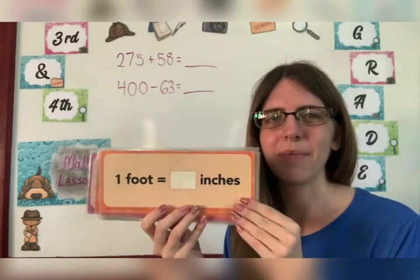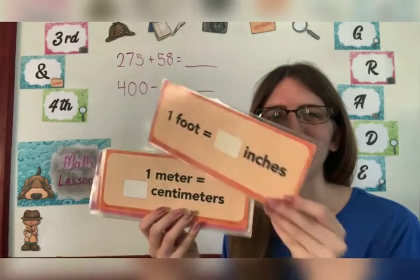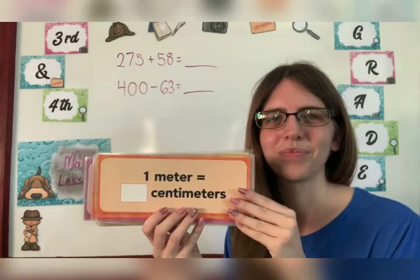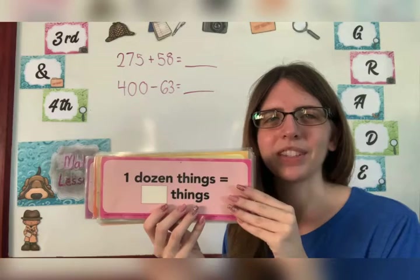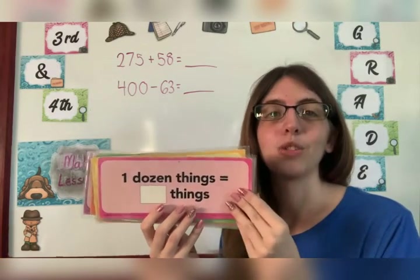One foot equals how many inches? Twelve inches. One meter equals how many centimeters? One hundred centimeters. One dozen things equals how many things? Twelve things.